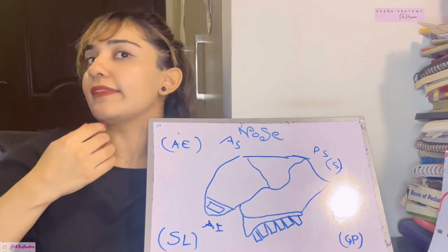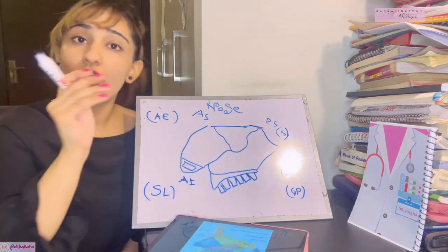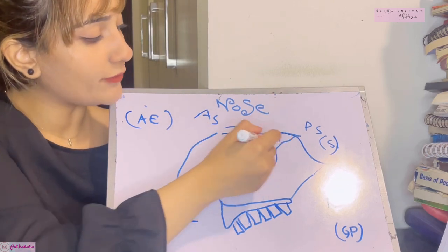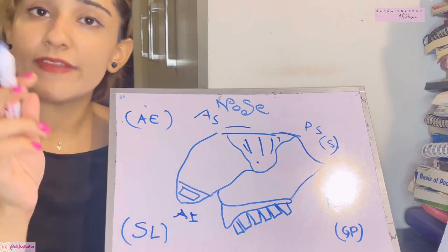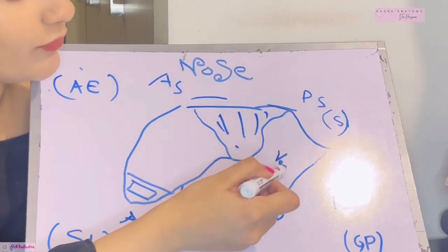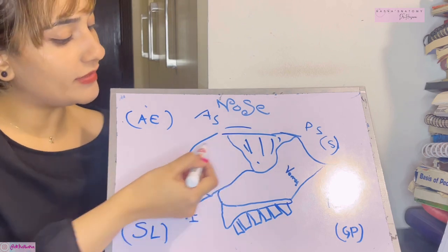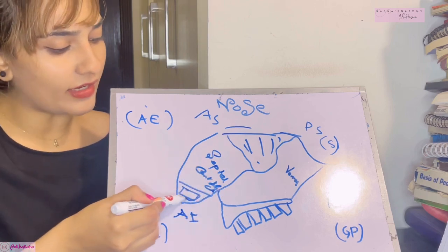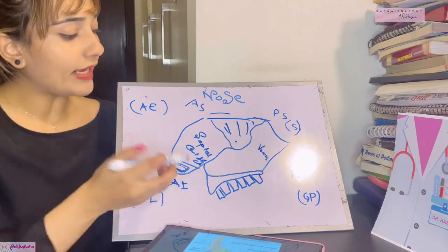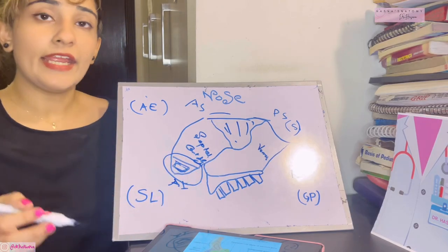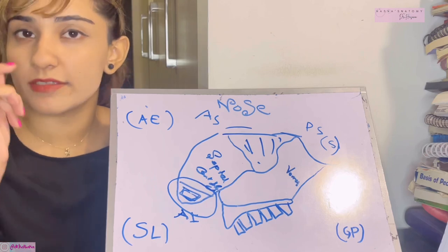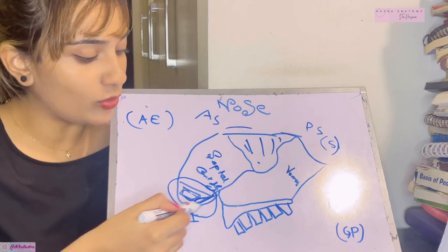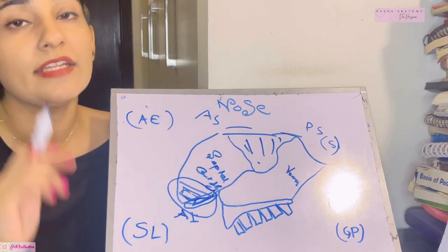The bony part consists of the perpendicular plate of the ethmoid bone above, and the vomer bone below. The cartilaginous part is the large septal cartilage, and there is also a septal process of the inferior nasal cartilage. The anteriormost part of the nasal septum is called the cuticular part — the most anterior tiny part you can actually see, covered by fibro-fatty tissue and skin. Its lower margin is the columella.